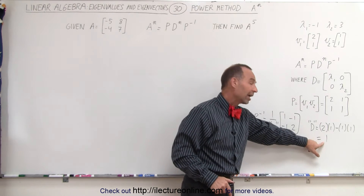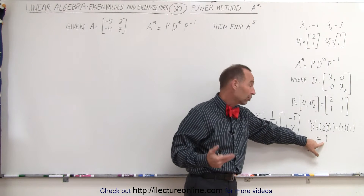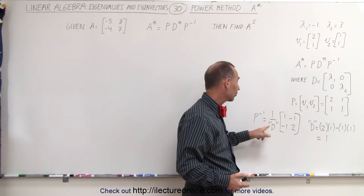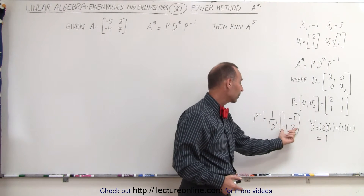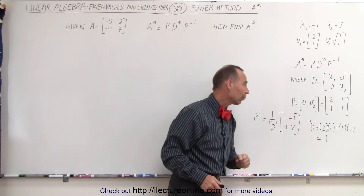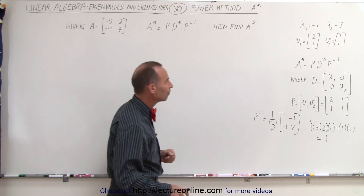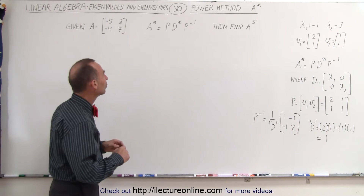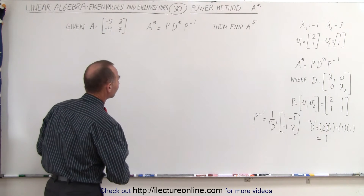In this case, the determinant is equal to 1 for this matrix, so the P inverse is simply 1, negative 1, negative 1, and 2.